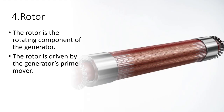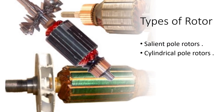Number 4: Rotor. The Rotor is the rotating component of the generator, driven by the generator's Prime Mover. The Rotor of an AC Generator is of two types: salient pole rotors and cylindrical pole rotors.